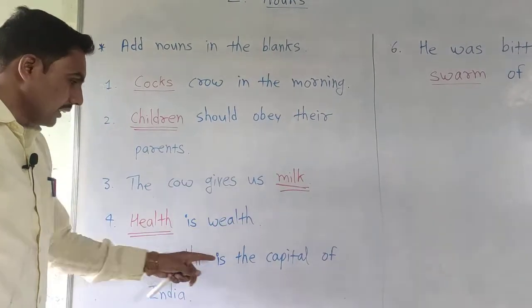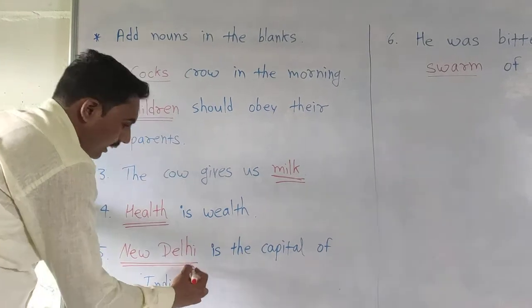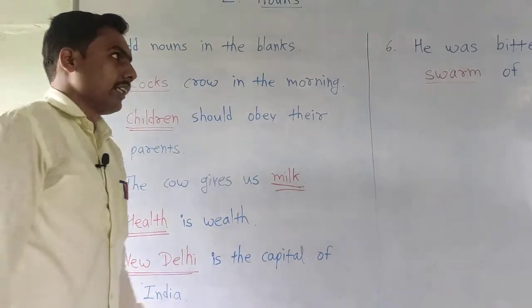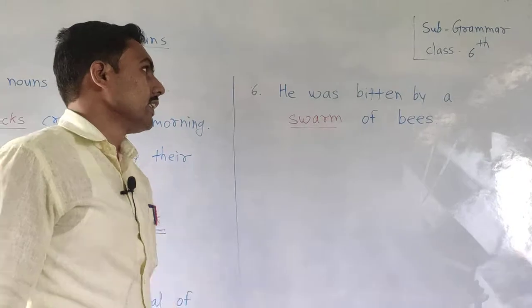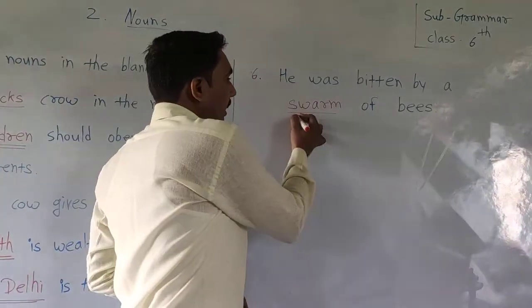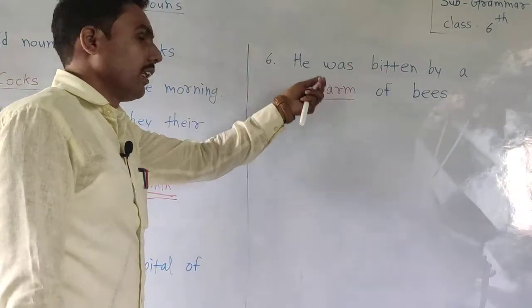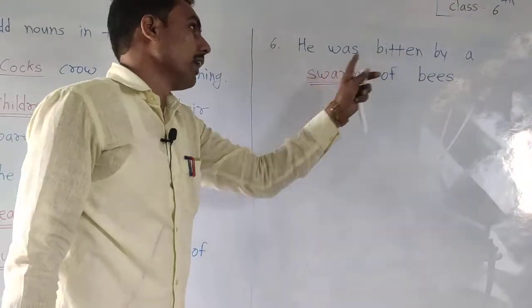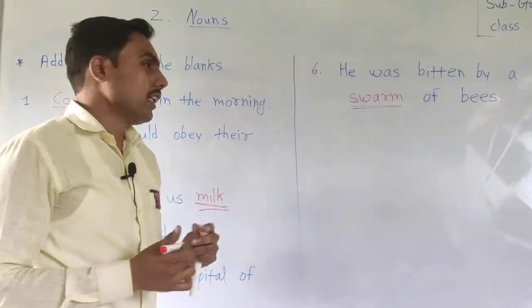Now the next example: dad dash is the capital of India — New Delhi is the capital of India. You can write here according to sentence meaning. And the last one: he was bitten by dad dash of bees — he was bitten by a swarm of bees. In this way, you can solve this exercise.